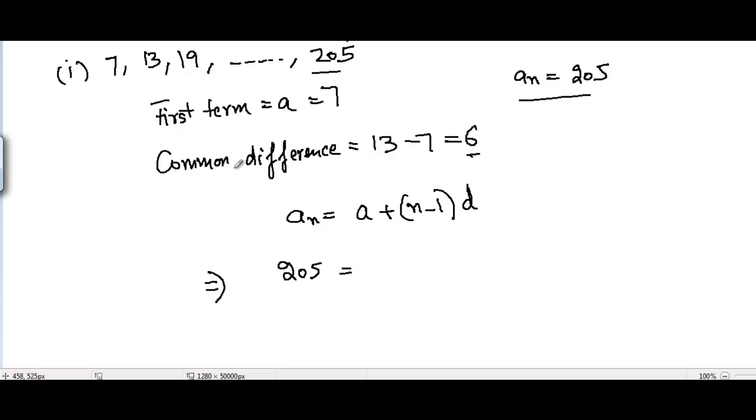So I will put a - a is 7 here, n is unknown, and d is 6. So I just need to find the value of n. So 205 = 7 + 6n - 6.